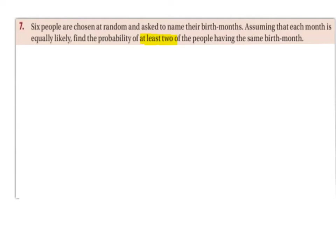Something important to note is that if we're talking about birth months, there are 12 months in a year. And it's also important to note that each month is equally likely. So any of the six people we're choosing could have any of the 12 months as their birth month — January, February, March, up as far as December — so they have an equally likely chance of having any of the 12 months for their birthday.